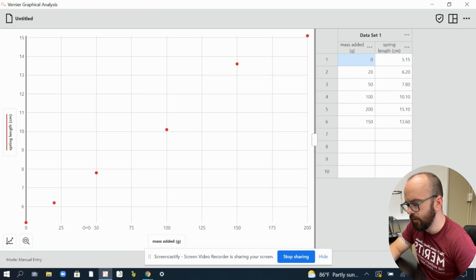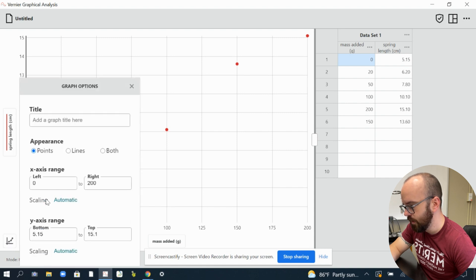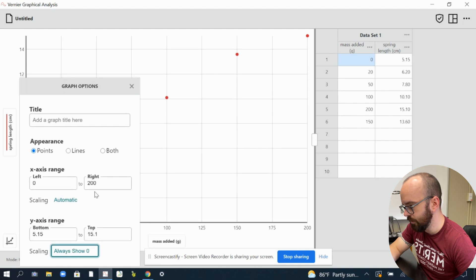Now one thing that I'll notice on here is I don't really like my axes. It doesn't start with, it looks like it's at 0, 0 right there, but it's really not because this axis doesn't start at 0. So I always come here, I click this, and then I'm going to edit graph options. And then I like to do my scaling, always show 0. And I do that for both my X and my Y. And then now that looks very similar to what I had before.